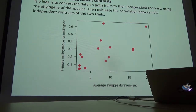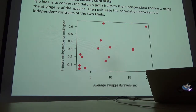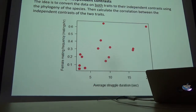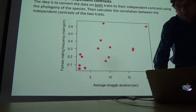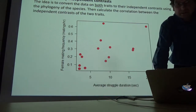This method Felsenstein invented he called phylogenetically independent contrasts. His idea was to convert the data on both traits to their independent contrasts using the phylogeny of the species, and then calculate the correlation between the independent contrasts of the two traits. If the Brownian motion assumption is correct, you've solved the problem of non-independence.